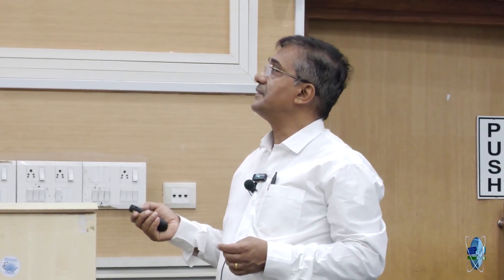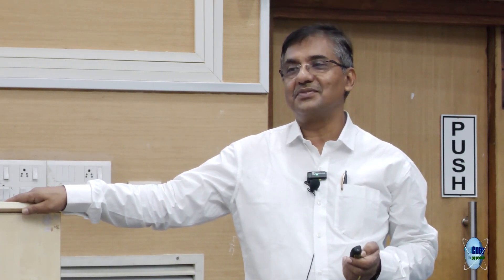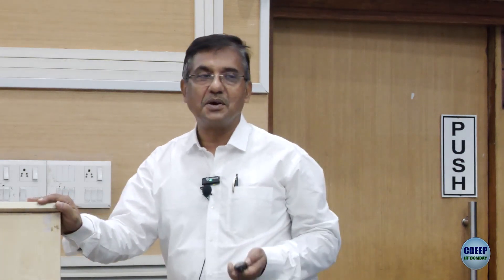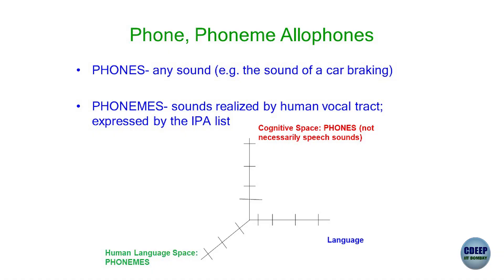In semantics there are interesting phenomena like meaning shift. The word 'silly' originally meant 'joyful and happy' — the meaning shifted over time to negative. That is the job of historical linguistics. The first element of linguistic structure is the phone. Phone, phoneme, and allophone — just some terms introduced here to be elaborated as we go forward. There is a big iceberg below; only the tip is being shown.